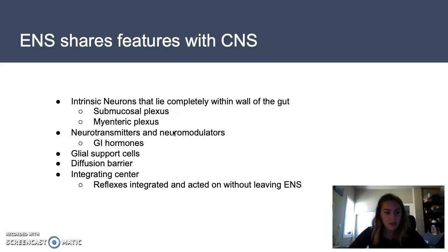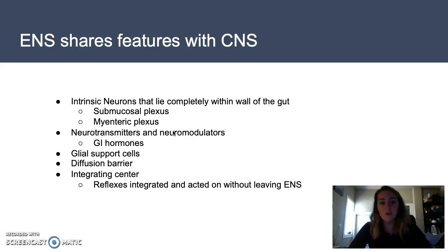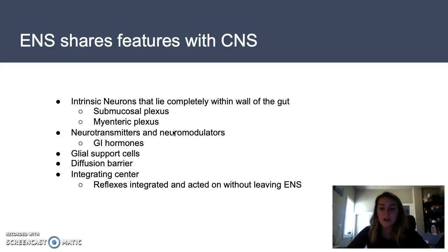Secondly, there are neurotransmitters and neuromodulators that have been identified that act specifically within the GI tract for communication and initiation of reflexes. More than 30 have been found and they are classified as specific GI peptides and hormones. Another shared feature is that glial support cells are found in the plexus. One difference is that the GI glia are found to be more similar to astroglia in the CNS than Schwann cells found in the peripheral nervous system.